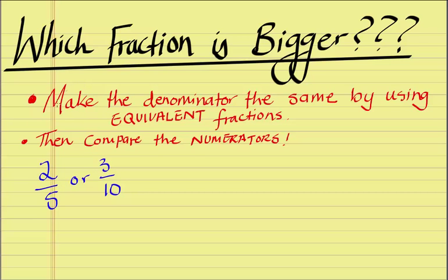What we first do is we make the denominators the same by using equivalent fractions, then compare the numerators as the last step and that's how we know which fraction is bigger.